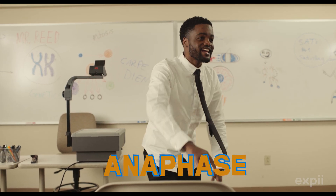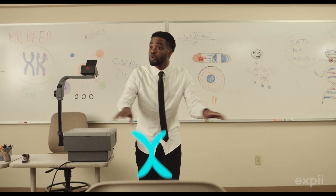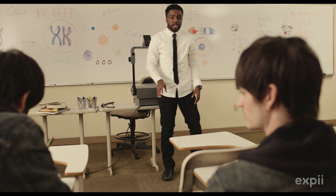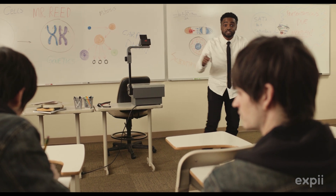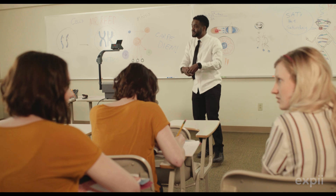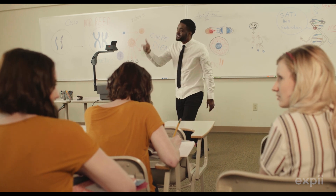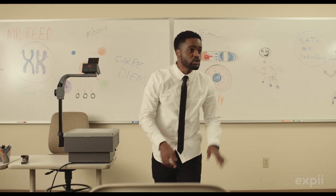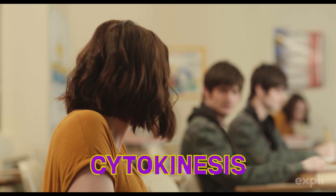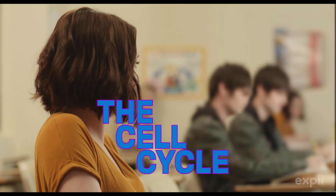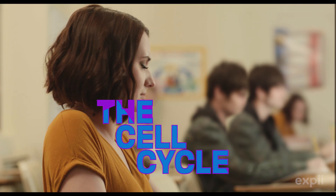Anaphase — it's the next stage. Chromosomes split and go in opposite ways. Telophase is it, the final step is here. The spindle disappears, nucleolus reappears. The nuclear membrane, it comes back too. And with that, mitosis is finished, it's through. And then the cell splits — that's cytokinesis. The two new cells start over at the genesis.